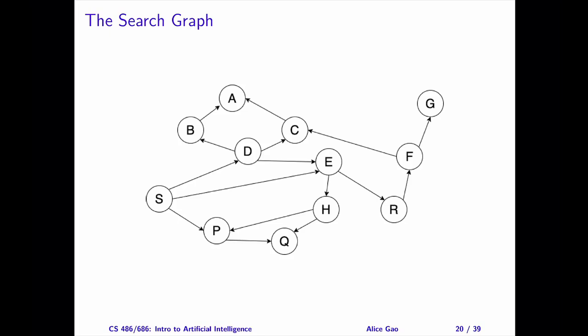First, let's take a look at a search graph. Given the formulation of a search problem, we have enough information to generate the search graph. Create one node for each state. Each state appears exactly once in a search graph. There are no duplicates.